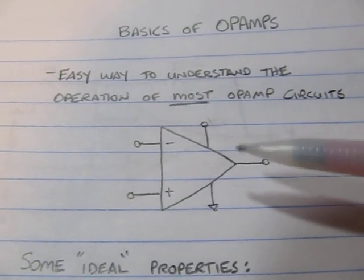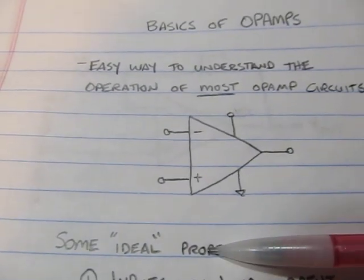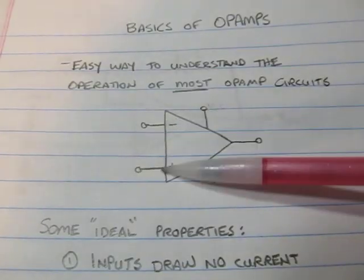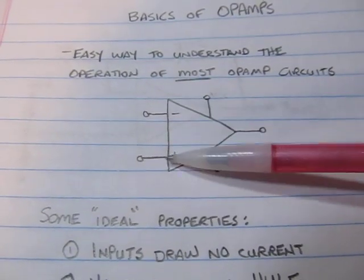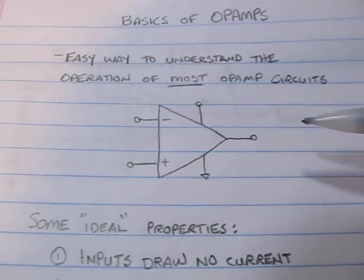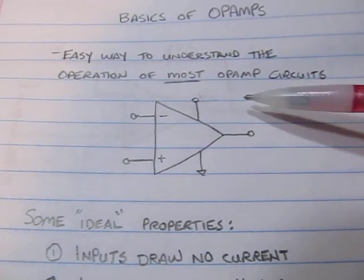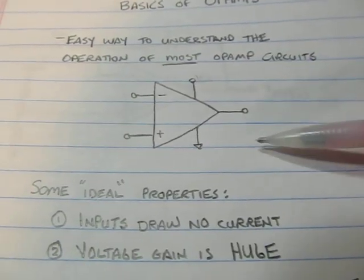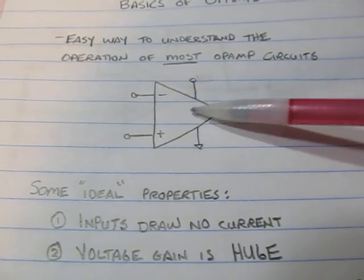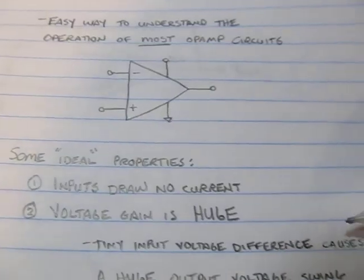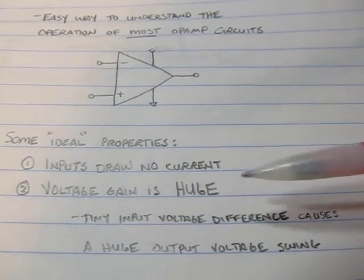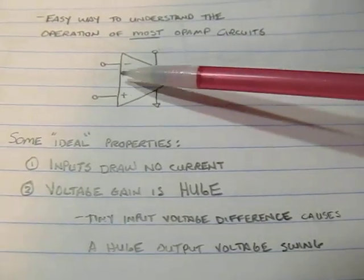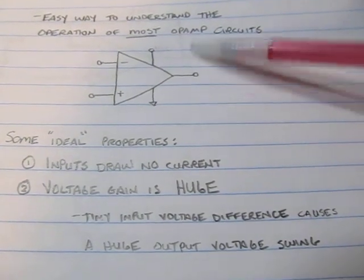In order to do that, we'll first consider just a couple of ideal properties of an op-amp. One is that the inputs to the op-amp, the non-inverting and the inverting inputs, basically draw no current. The reality is they draw a little, but for the ideal purposes let's consider they draw no current. We also consider that the voltage gain is huge, and yet another way to think about that is that a tiny input voltage difference, a very small voltage difference between these two inputs, will cause a huge output voltage swing.